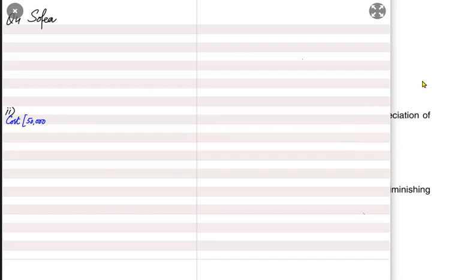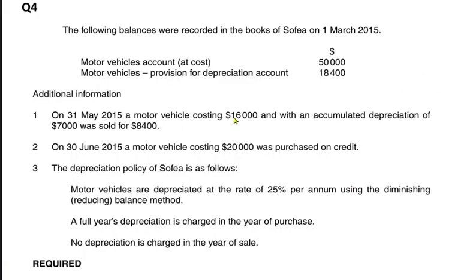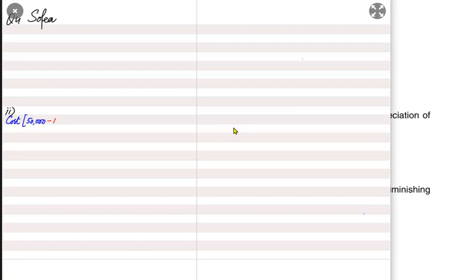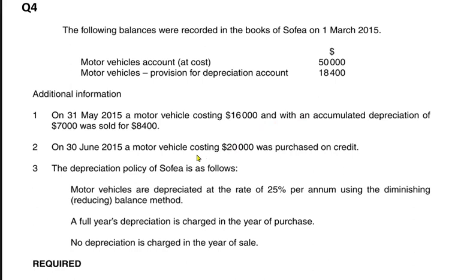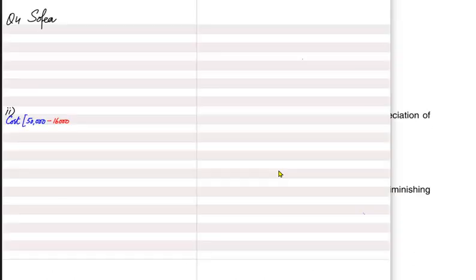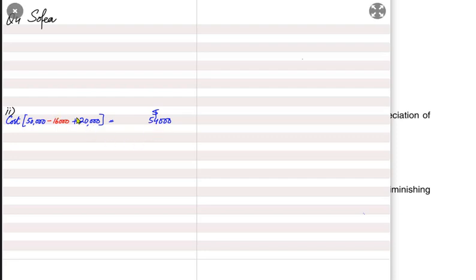As shown in Note 1, we sold a machine that originally cost the business 16,000. We deduct that disposed asset's cost of 16,000, and we add the new vehicle purchased for 20,000. At the end of the year, we are left with assets that cost 54,000.